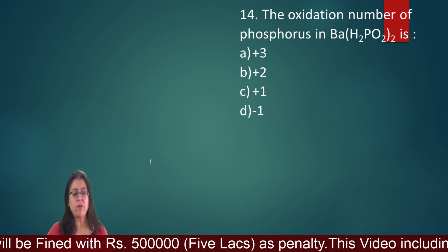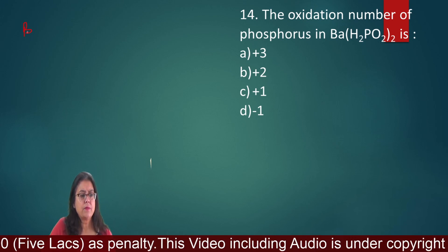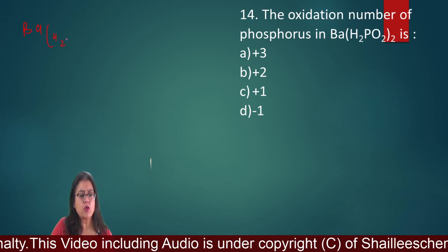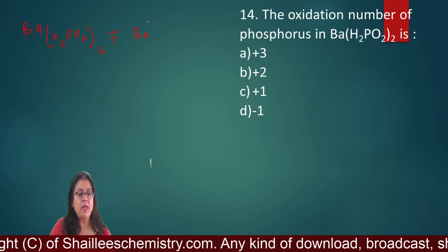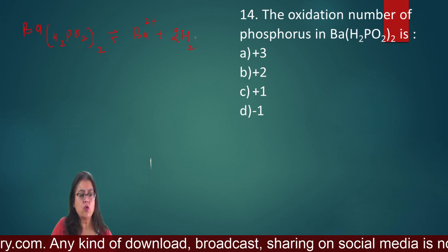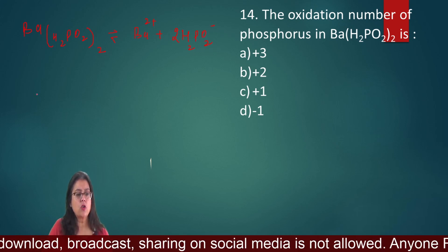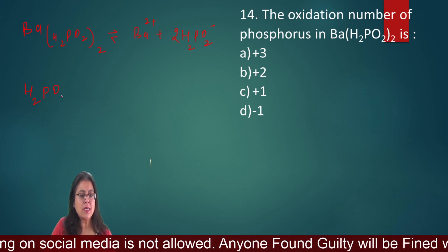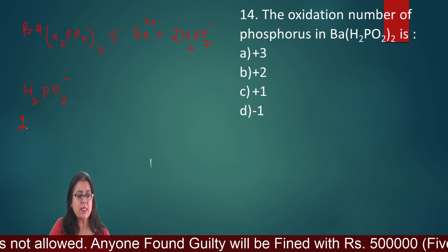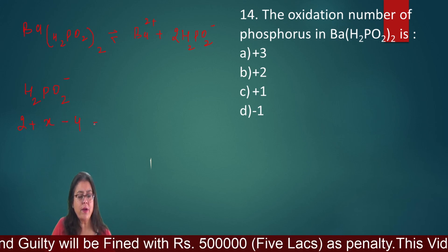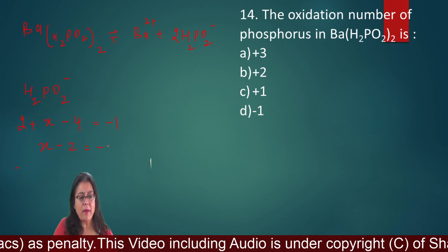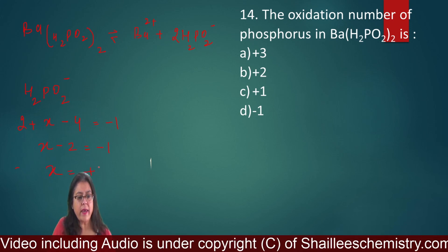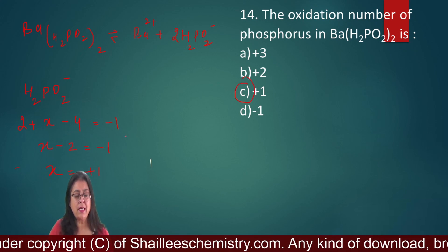Question number 14: Oxidation number of phosphorus. Setting up the equation: 2 + X - 4 = -1, which gives X - 2 = -1, therefore X = +1. The oxidation state of phosphorus is +1, and the correct option is C.